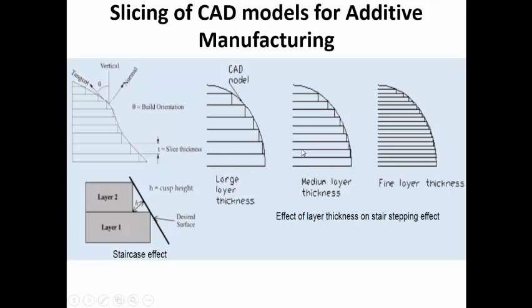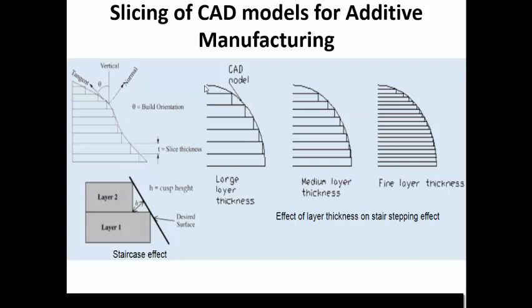Maintaining constant layer thickness makes it impossible to get the best approximation of a given surface. The next best solution is not to use very fine layers everywhere, but only where it is absolutely necessary. Looking at the figure, fine layers are needed where the surface is very far from the vertical. When the surface is close to vertical, you do not need small layers. As the build orientation deviation increases from the vertical, finer layers are needed.